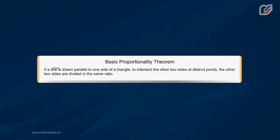Basic Proportionality Theorem: If a line is drawn parallel to one side of a triangle to intersect the other two sides at distinct points, the other two sides are divided in the same ratio.